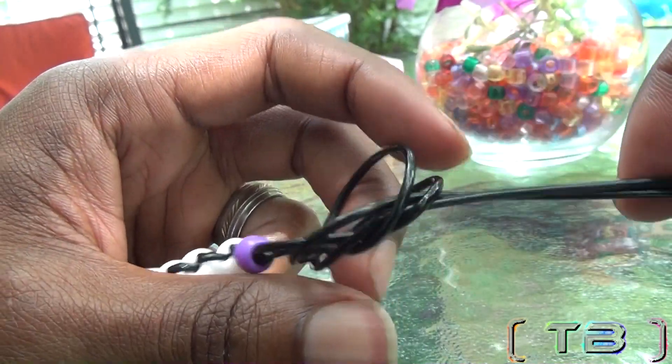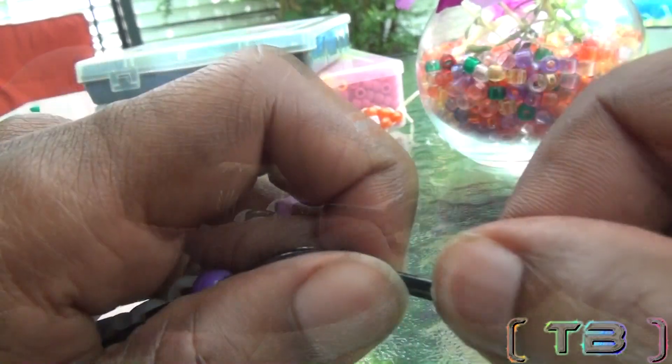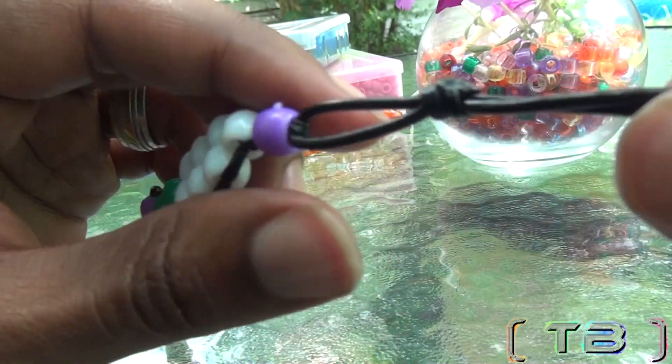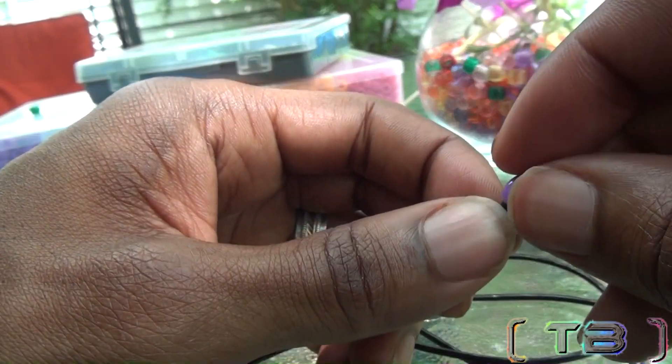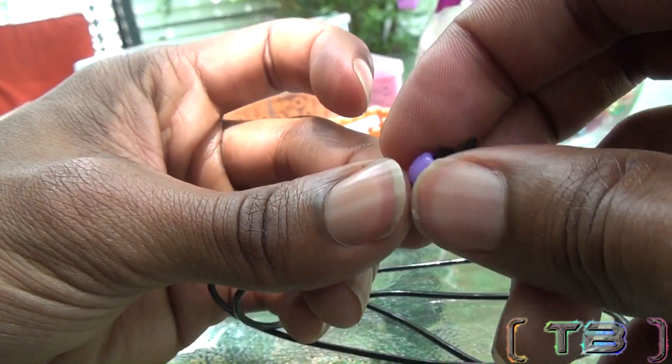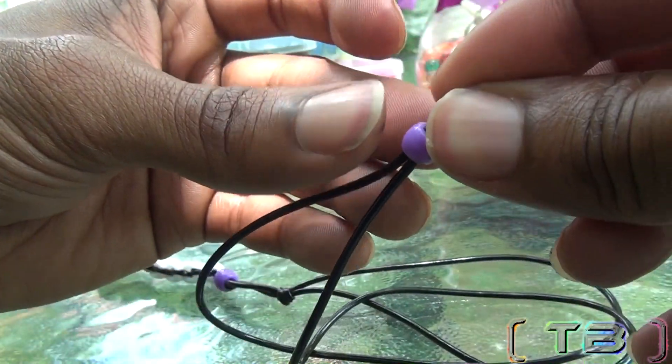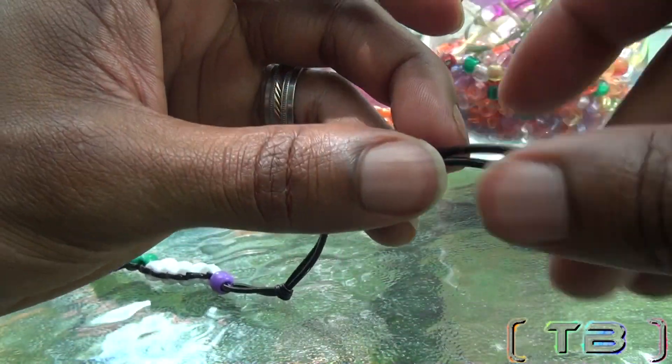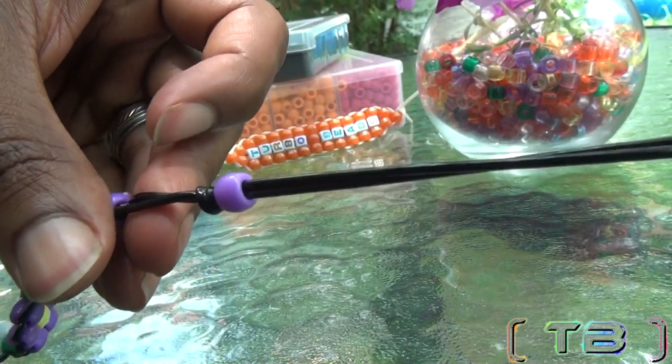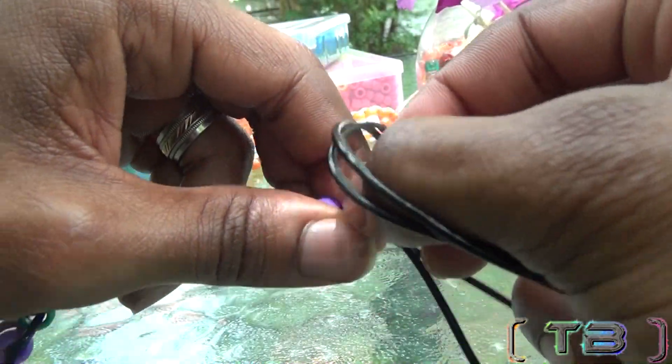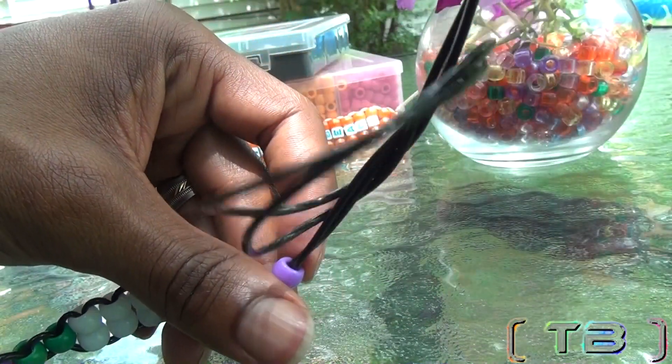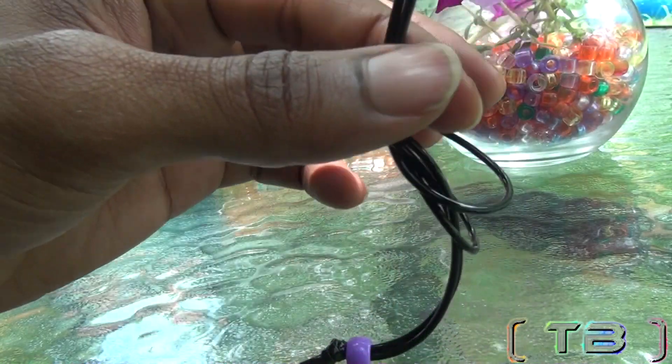When tightening the knot, be sure to keep some space in between the bead and knot. Let's add another bead with the two matched ends of string going in the same direction, pushing the bead until you've reached the knot. Make another knot with the two matched ends of string and tighten it until you've locked in the bead.